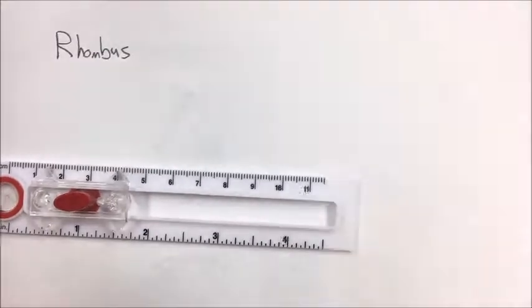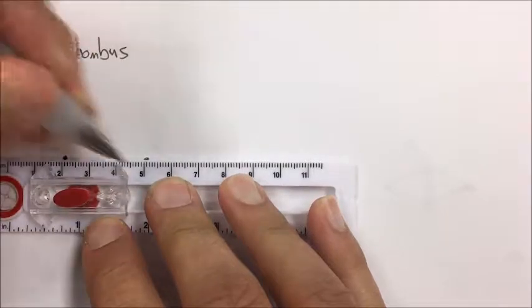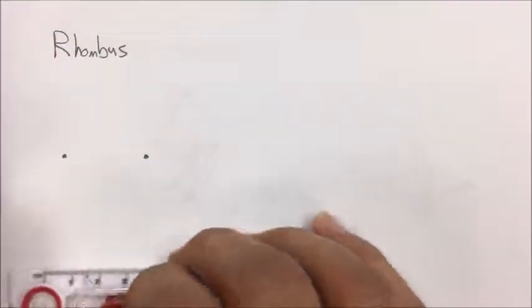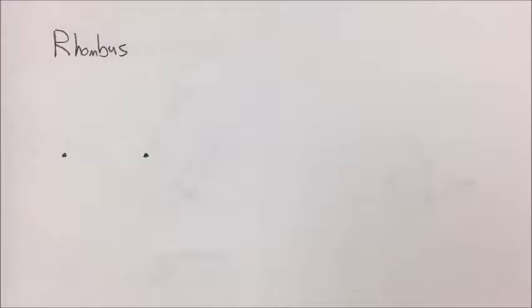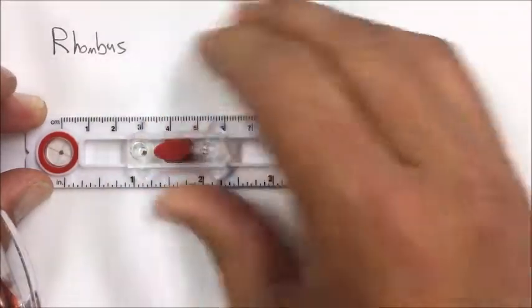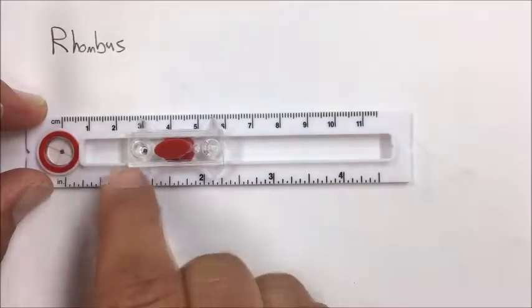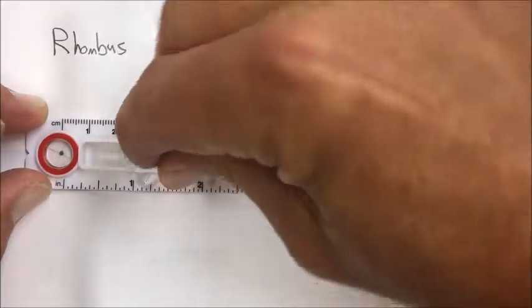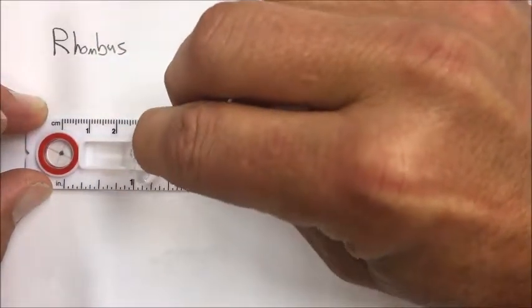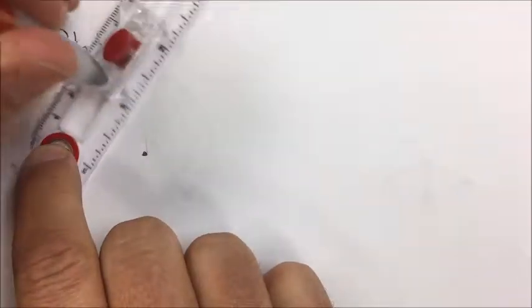We're going to construct a rhombus. I'm going to pick two points, and there are actually an infinite number of different rhombi I could make from these two points. The one that connects back to what we've already done is to fix this distance on my compass from one corner to the other, and then do my circles.